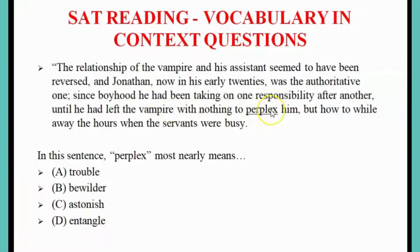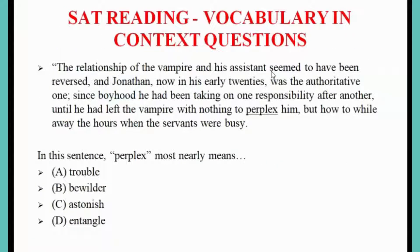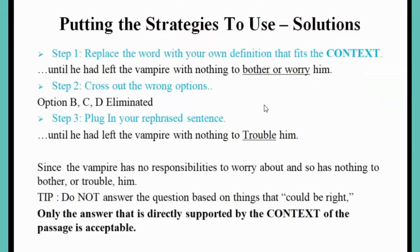You can come up with something like: until he had left the vampire with nothing to bother him, with nothing to worry him, with nothing to trouble him. Anything of that sort would be the correct one. Once we establish that context, we then look at the options and cross out those that are not close to 'bother him' or 'worry him.'